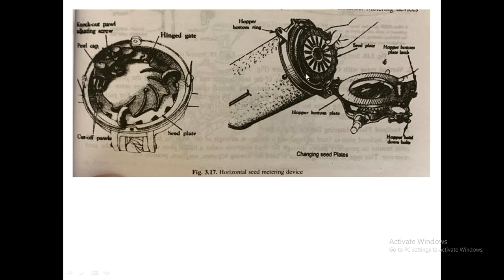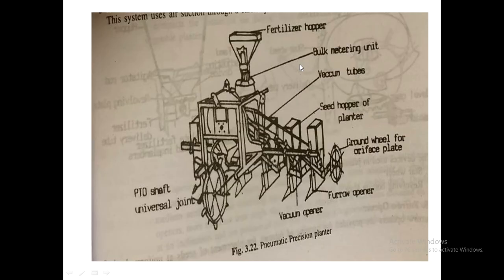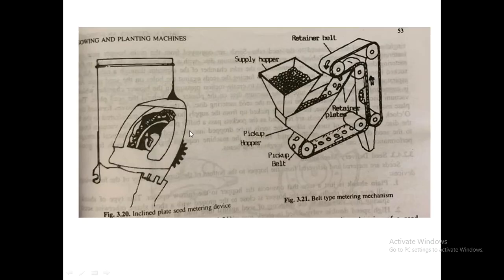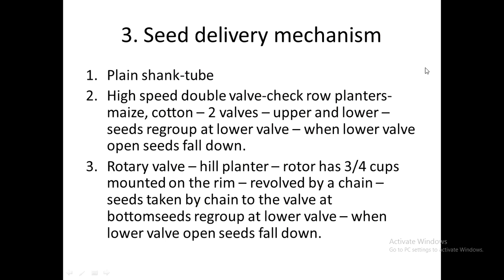Here we can see the horizontal seed metering device — from the top view fitted below the hopper through which seeds pass. A pneumatic precision planter is high precision, efficient, and prevents clogging of the openings in the seed metering device. Here we can also see the inclined metering device and the belt type metering device, including the roller used for preventing excess seeds from filling the holes in the belt.